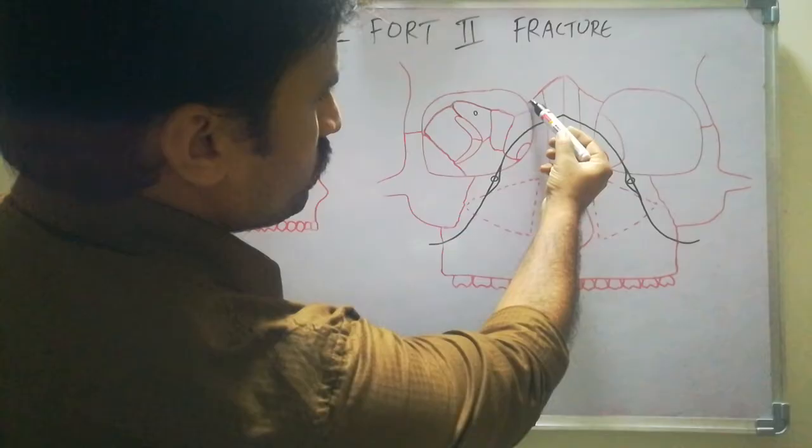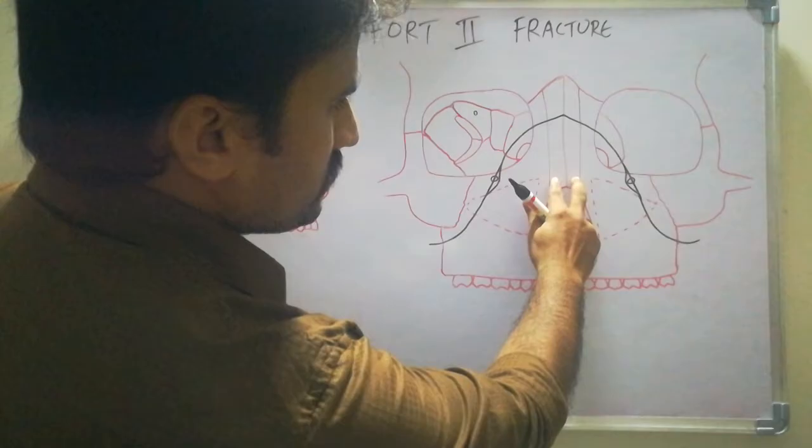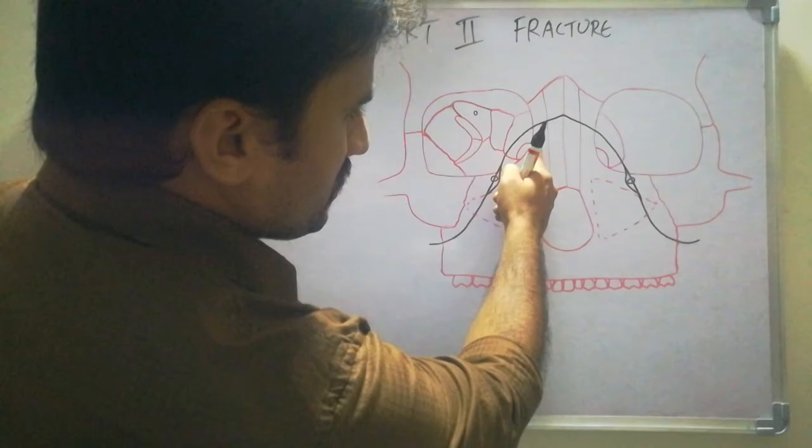This is the frontonasal suture and these two are the nasal bones, right and left. These are the nasal bones. This is the frontal process of the maxilla — this complete structure here.